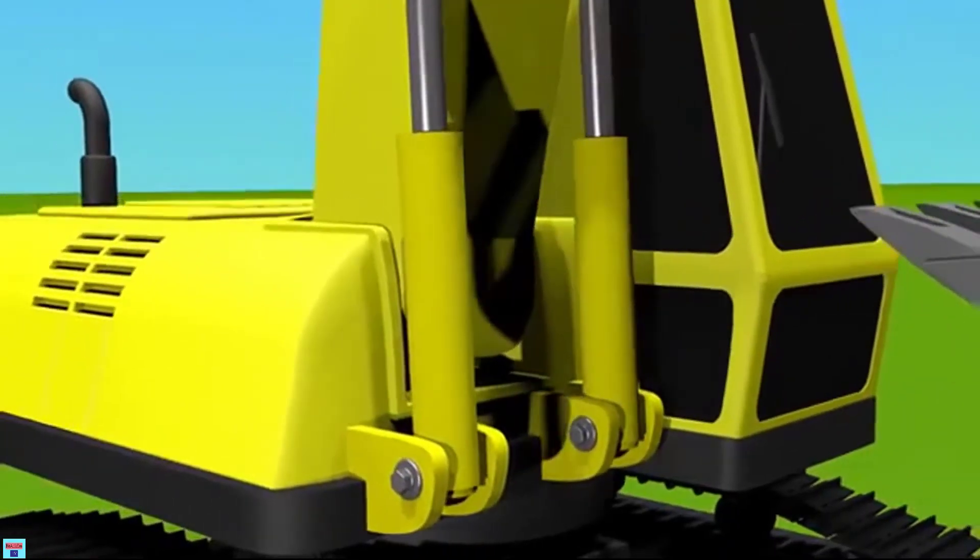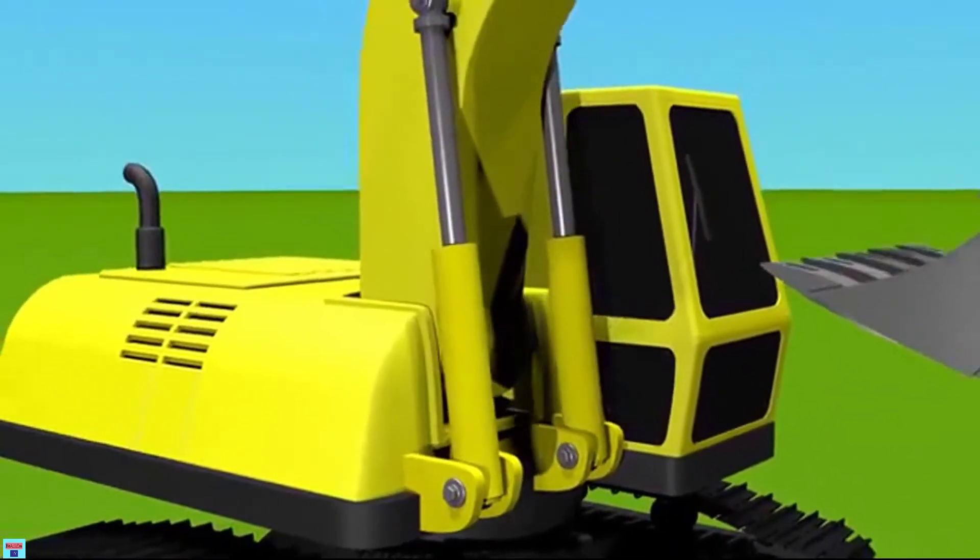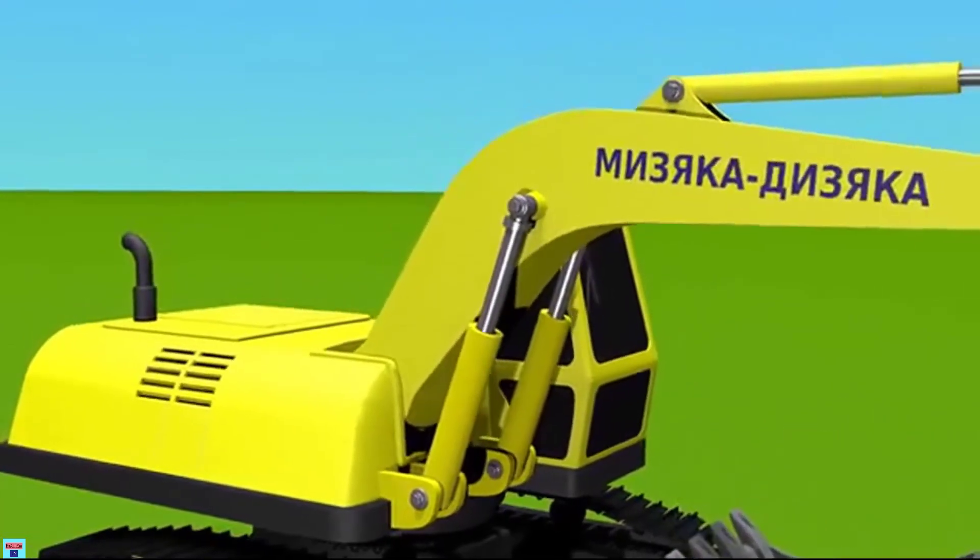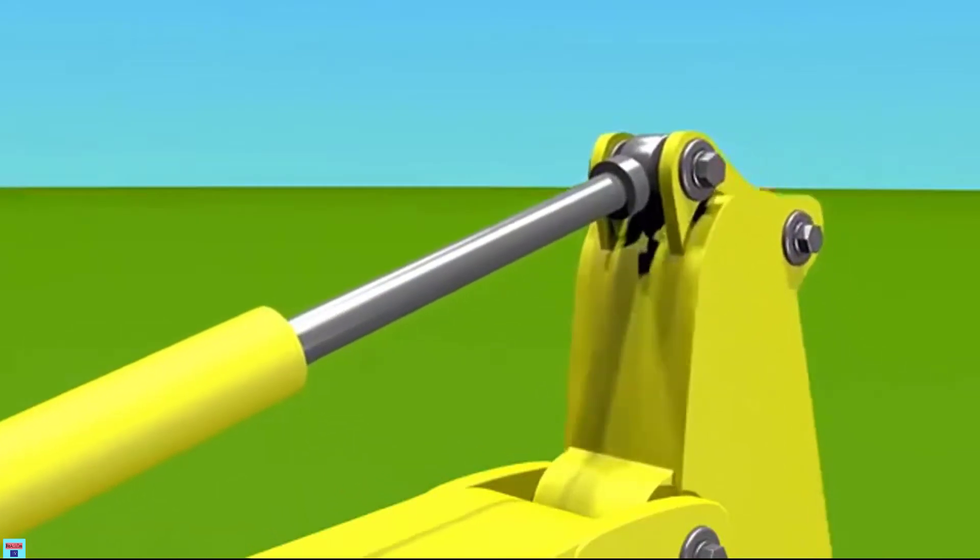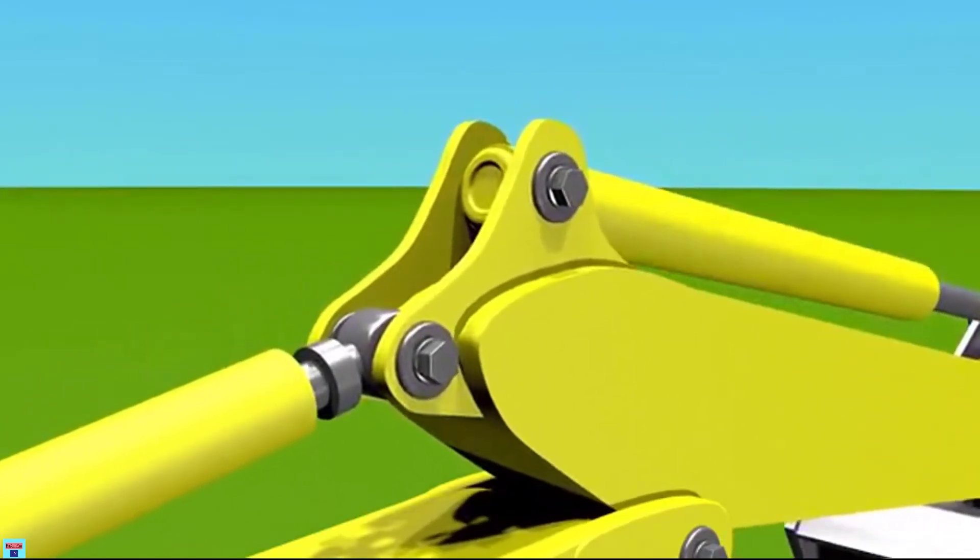These hydraulic cylinders are responsible for the movement of the boom. This hydraulic cylinder makes the arm maneuver.